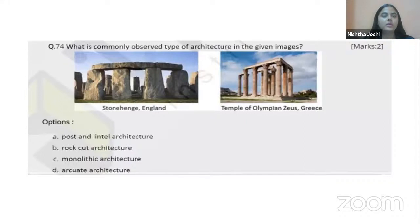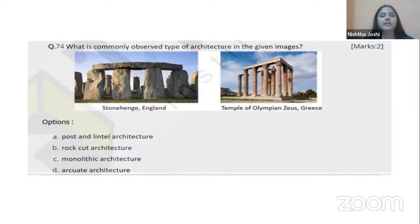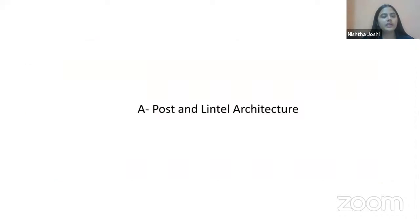What is the commonly observed type of architecture in the given images of Stonehenge and the Temple of Olympian Zeus from the ancient Greek period? Both have vertical members (posts) and horizontal members (lintels). The right answer is option A, post and lintel form of architecture.